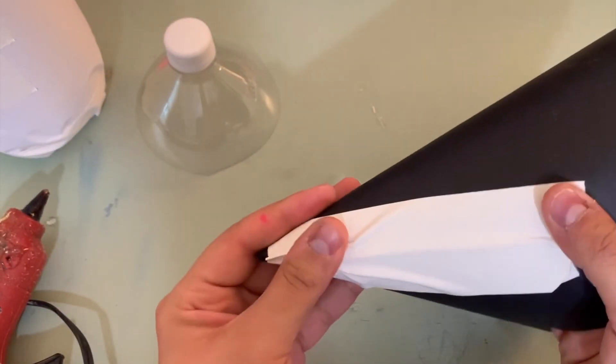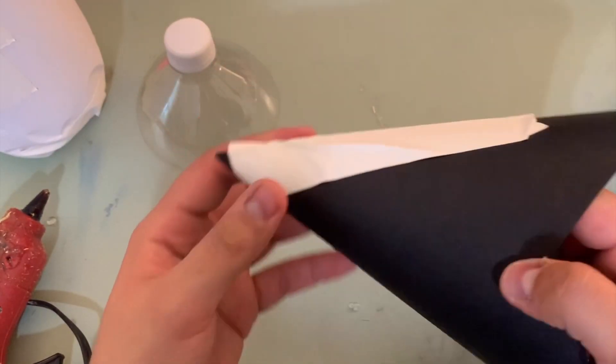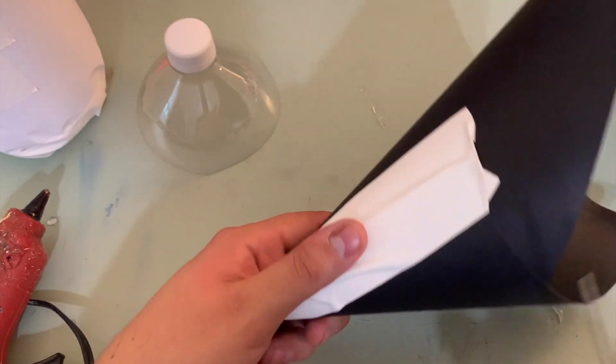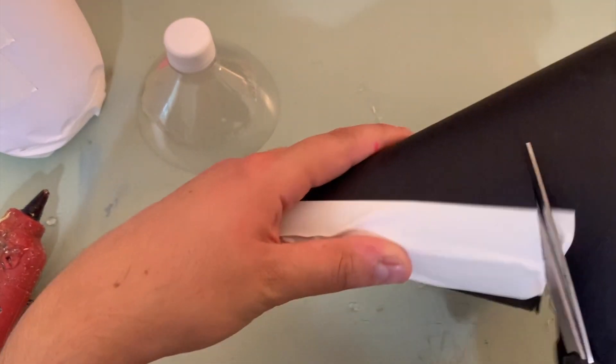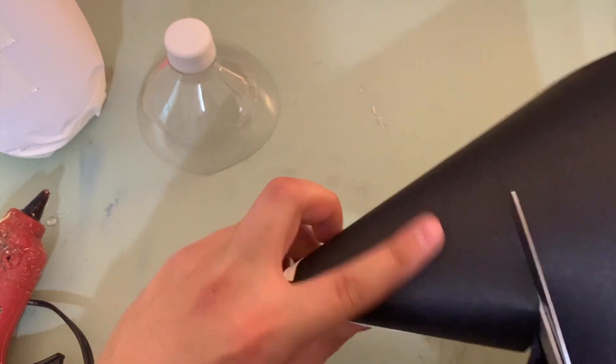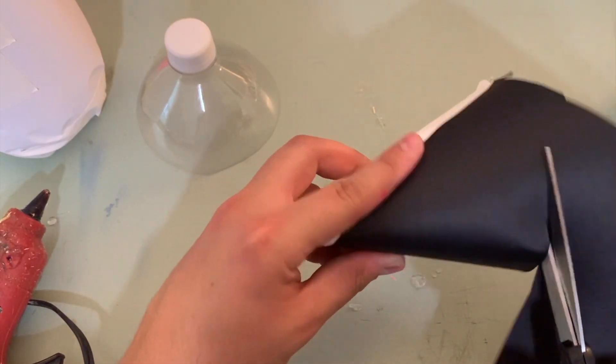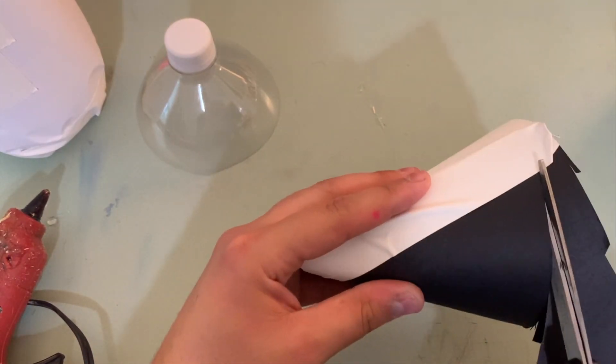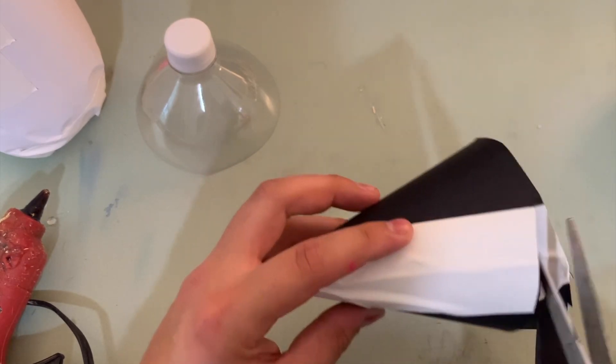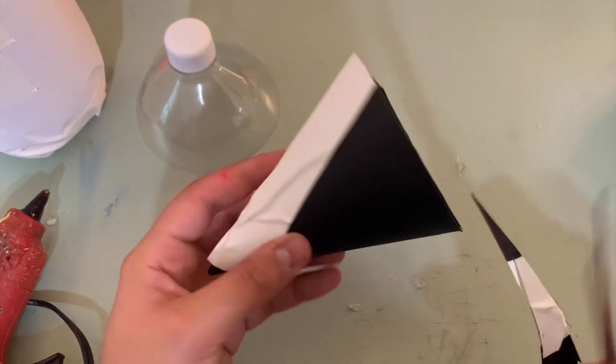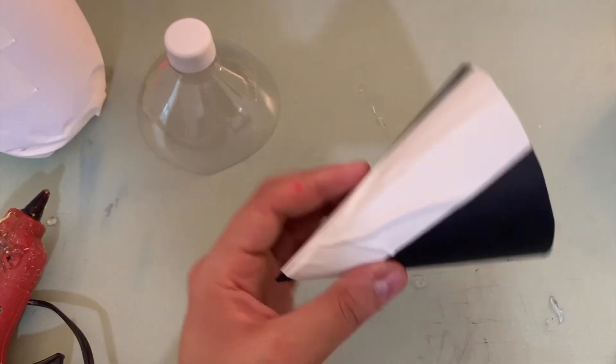Alright, use your tape to make sure it actually becomes a cone, stays that way. Then we're just going to trim off all the excess. Alright, what a skill, learning how to make cones in physics. There we go.